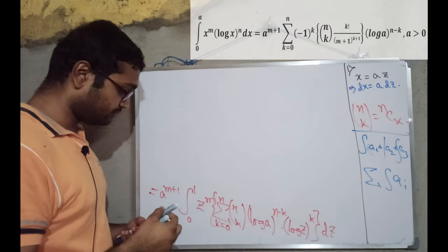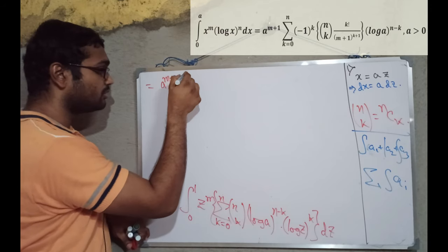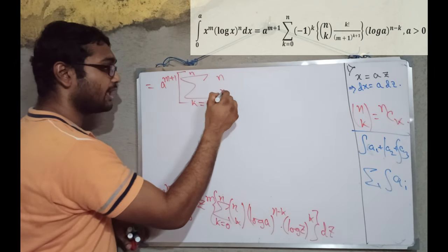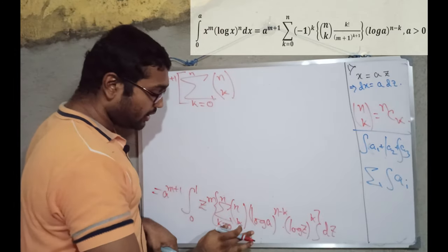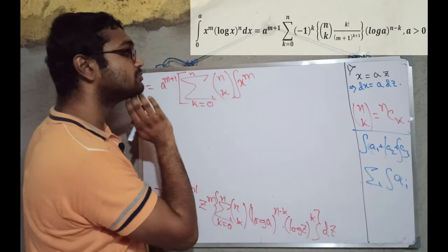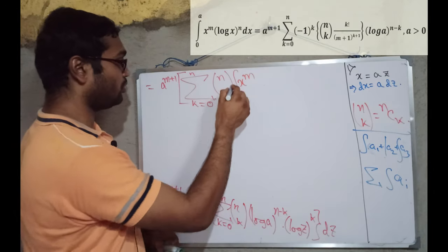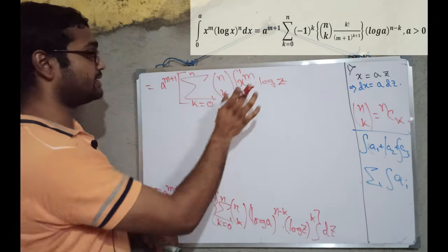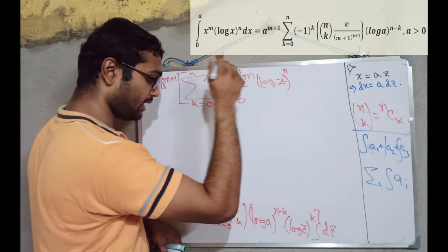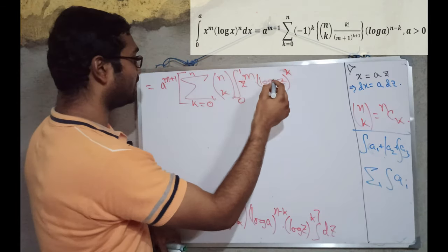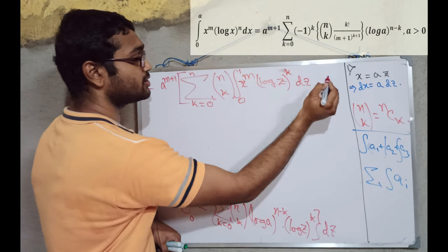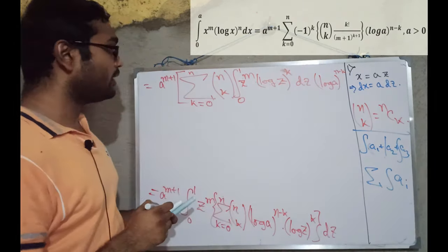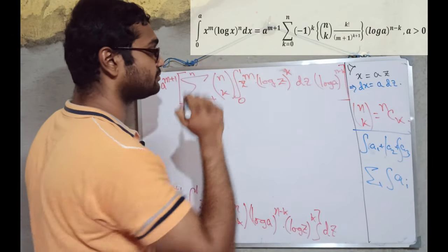From this step to here, let me show you. A to the power m plus 1. And then, summation of k equal to 0 to n, n c k. And then, what is remaining here? z to the power m is common for all of them. So, from 0 to 1, z to the power m times log of z to the power k. And after that, dz, when the integration is over, there is log a, this is constant obviously. That's why we are taking it outside. n minus k. And let's finish the round bracket.